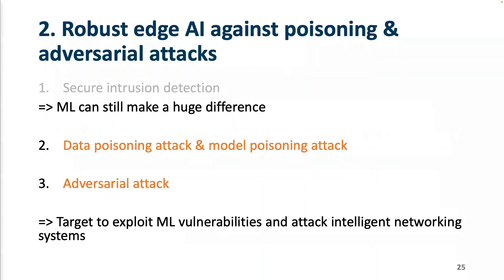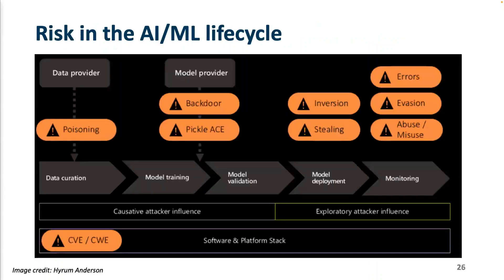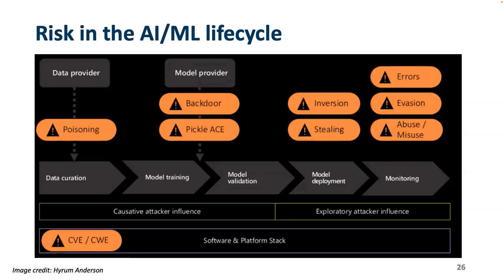The second project is how can we build robust AI and edge AI against poisoning attacks and adversarial attacks, and extend that to edge computing. When we build our machine learning model — through data curation, model training, model validation, model deployment, and monitoring — there are so many places attackers can take advantage of. In cybersecurity, we call these attack vectors. During data curation, when you're collecting data, there's a high chance attackers can poison your data samples — we call this data poisoning.